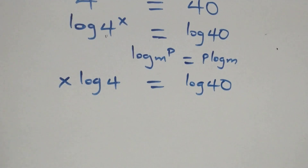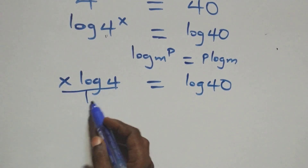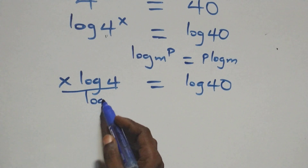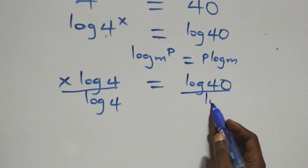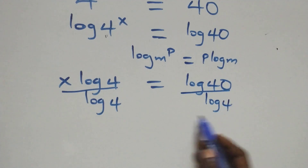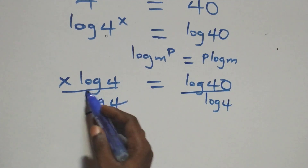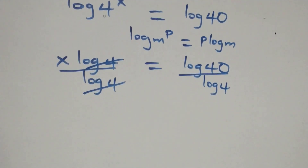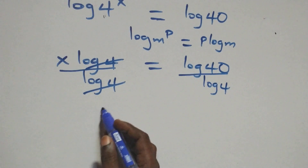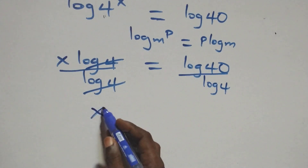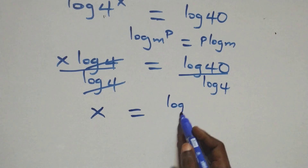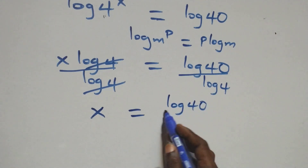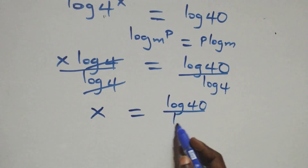The next step, we divide both sides by log four. Dividing this side by log four and also dividing the other side by log four — the log fours cancel each other and we have x left, which is equal to log forty over log four.